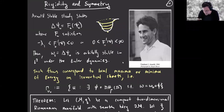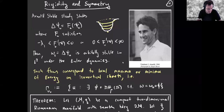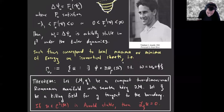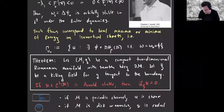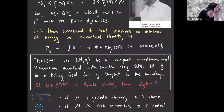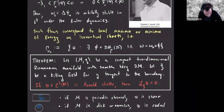They're called stable because Arnold showed that if a steady state has this property, then it's nonlinearly stable in the L2 topology of vorticity. A well-known result is that they do inherit the symmetries of the domain. This is stated in a recent paper by myself, Dan Ginsberg, and Peter Constantin, but I think it's well known.